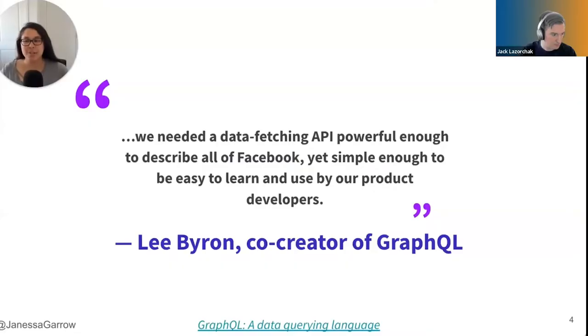GraphQL was created by Facebook back in 2012 when they were still Facebook as an improved data fetching approach that they could use across the company's services. In their words, they wanted a data fetching API powerful enough to describe all of Facebook, yet simple enough to be easy to learn and use by product developers. And then in 2015, Facebook open sourced GraphQL, and now all of us can use it.